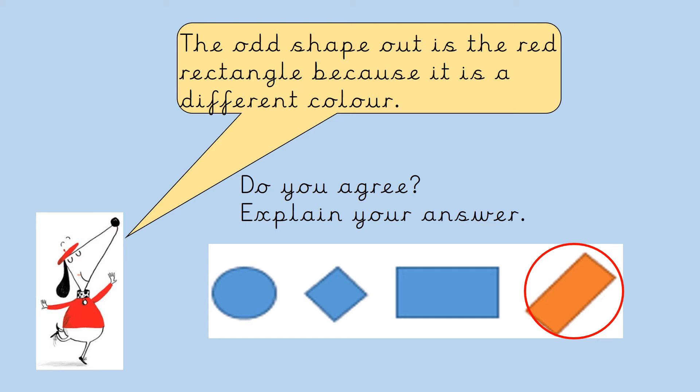Claude says that the odd shape out is the red rectangle because it is a different colour. Do you agree with Claude? Explain your answer. Let's talk about it together.